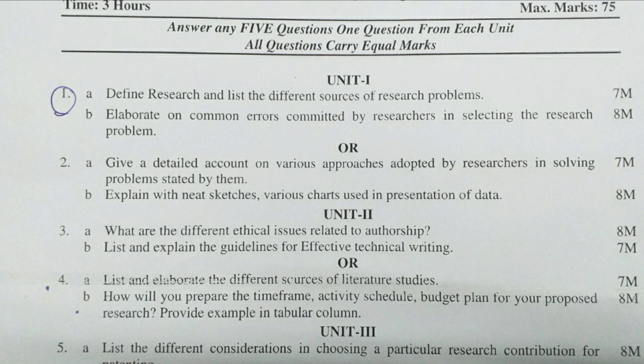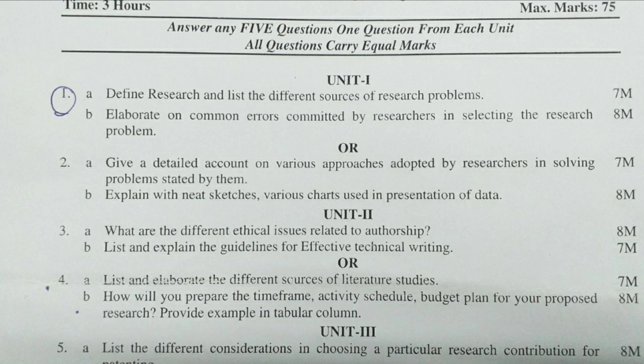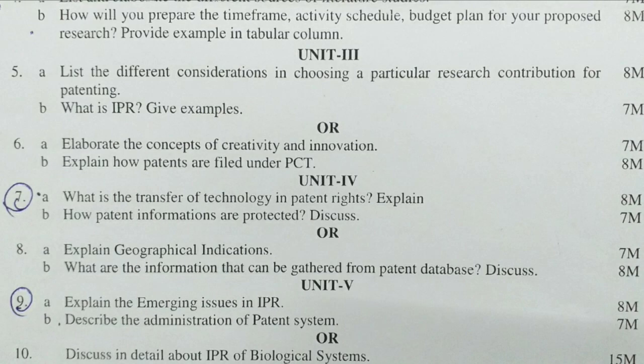Unit 2 — Third question A bit: What are the different ethical issues related to authorship? (8 marks). B bit: List and explain the guidelines for effective technical writing (7 marks). Fourth question A bit: List and elaborate the different sources of literature studies (7 marks). B bit: How will you prepare the time frame, activity schedule, and budget plan for your proposed research? Provide an example in tabular column (8 marks).